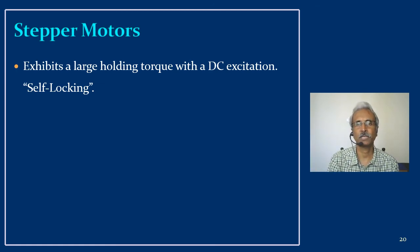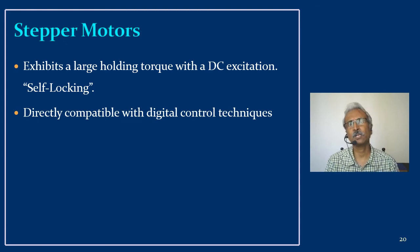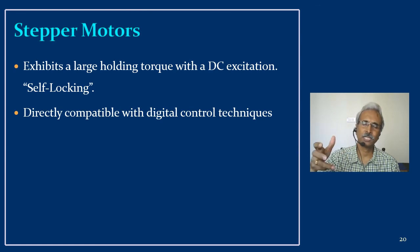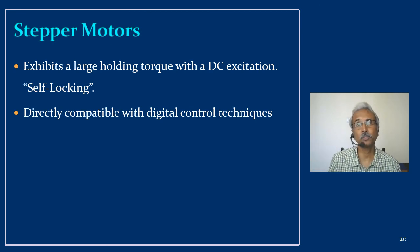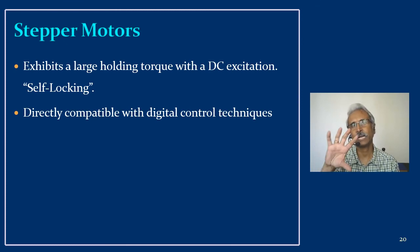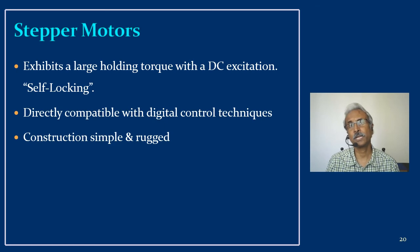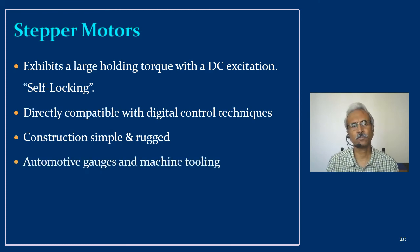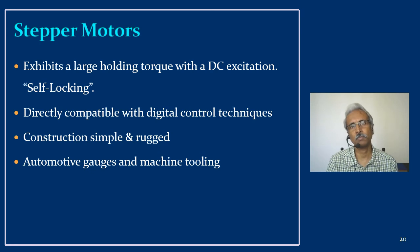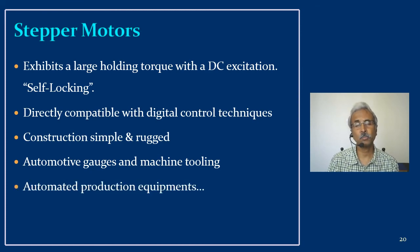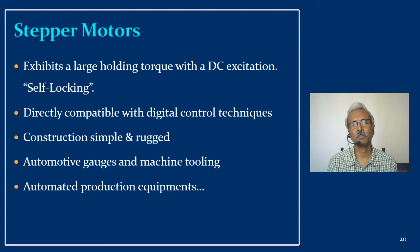Stepper motors are directly compatible with digital control techniques — since they move in pulses or steps, controlling them through a computer is easy without complex circuitry. Their construction is simple and rugged compared to servo motors. Applications in daily life include CD drives and printers. In industrial applications they are used in automotive gauges, machine tooling, and automated production equipment for small, precise movements. However, they are limited to smaller robots.